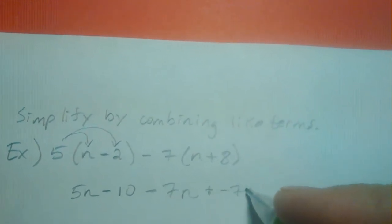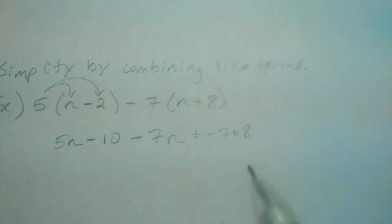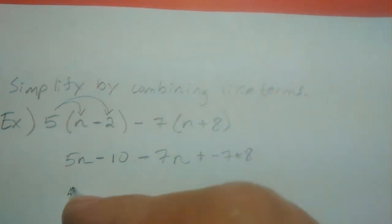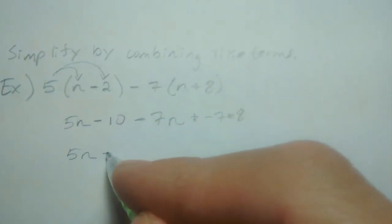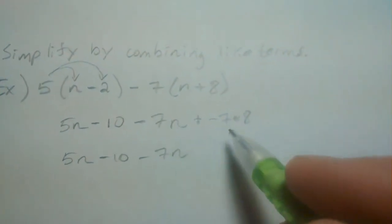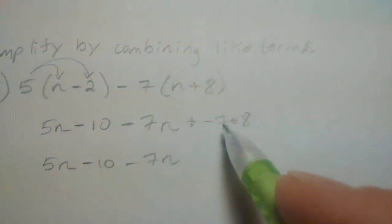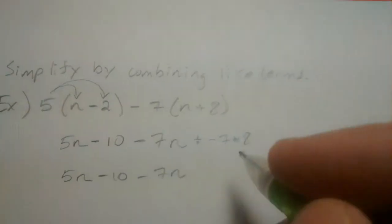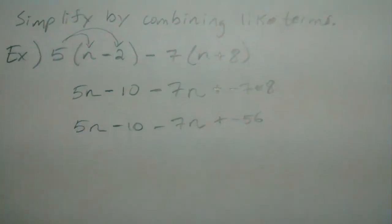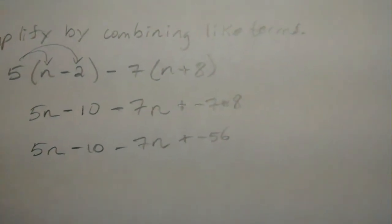Negative 7 times 8. So what we have here is 5n minus 10 minus 7n, and then adding this negative 7 times 8, which is a negative 56. So at this point we can combine like terms.